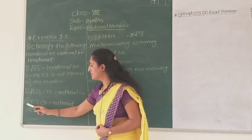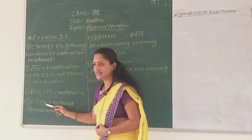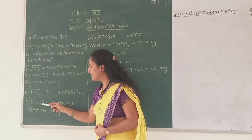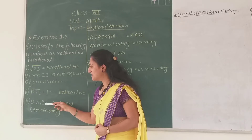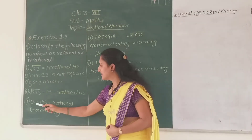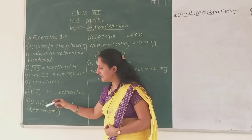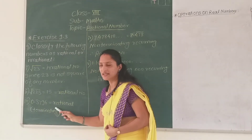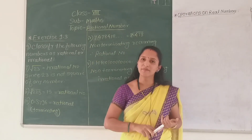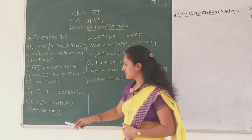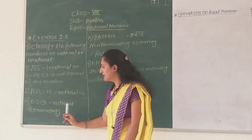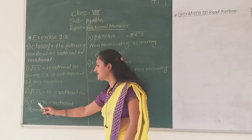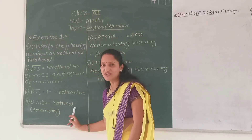Now look here, the third example is 0.3796. This is a decimal expansion. Now, this decimal expansion is terminating, since there are no repeating digits continuing indefinitely. That means this decimal expansion is terminating. And if the decimal expansion is terminating, then this number is a rational number — since the decimal expansion of a rational number is terminating. Therefore, 0.3796 is a rational number.